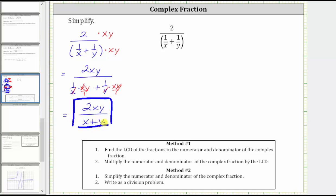Let's look at the second method. The first step of the second method is to simplify the numerator and denominator of the complex fraction. So of course we can't simplify the two, but we can find the sum of the fractions in the denominator. We have two over the quantity one over x plus one over y. We already know the least common denominator is xy, and therefore we now need to write both of these fractions as equivalent fractions with the denominator of xy.